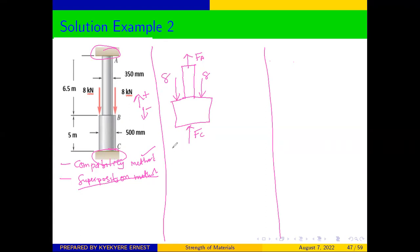Forces going up will be positive, whereas any force going down is negative. So we can see that FA going up is positive, FC going up is also positive, minus 8 down and minus 8 down equals zero. From here we can say that FA plus FC equals 16.